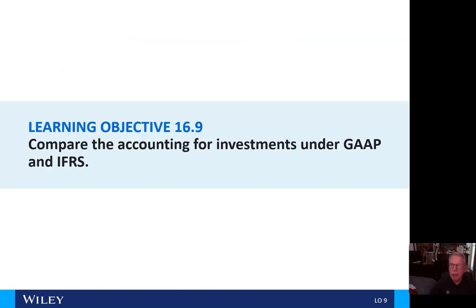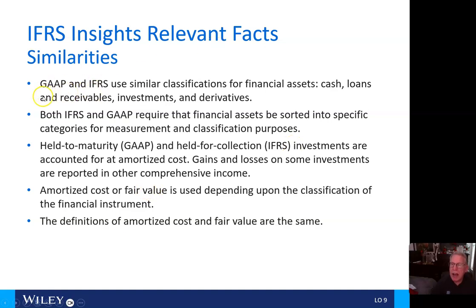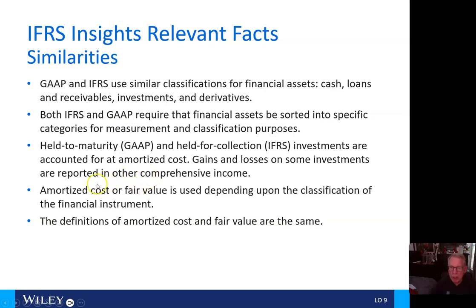Now we'll take a look at comparing accounting for investments under GAAP and IFRS. The similarities are: GAAP and IFRS use similar classifications for financial assets. Both IFRS and GAAP require financial assets to be sorted into specific categories for measurement and classification purposes. Held-to-maturity under GAAP and held-for-collection under IFRS investments are accounted for at amortized costs. Gains and losses on some investments are reported in other comprehensive income. Amortized cost or fair value is used depending upon the classification of the financial instrument. And the definitions of amortized cost and fair values are the same.